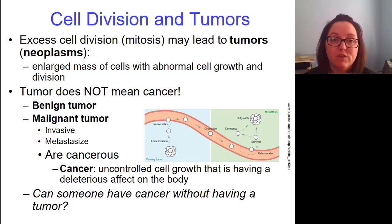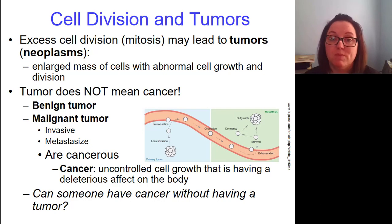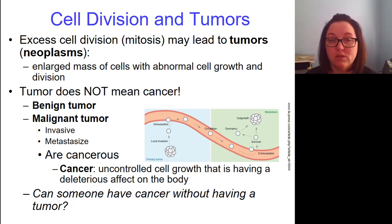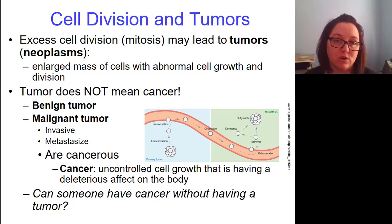When we talk about cell division, we have to talk about tumors and cancer. Excessive cell division — excessive mitosis — may lead to tumors. Tumors are also known as neoplasms. A tumor is an enlarged mass of cells exhibiting abnormal growth and division, and usually the cells themselves are abnormal. Tumor does not mean cancer.